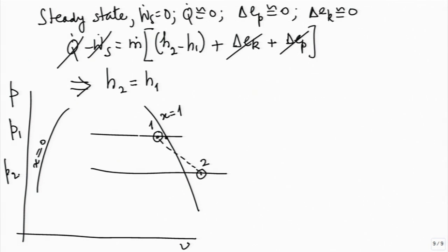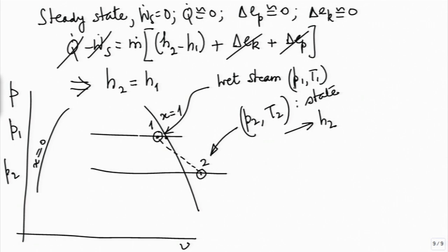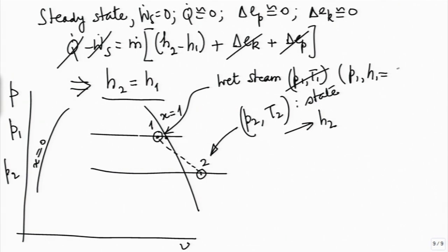When you are in the superheated zone, P2 and T2 decide the state. From here we obtain h2, and since state 1 is wet steam, P1 and T1 is not a good pair. So we use P1 and h1, which from this relation turns out to be h2.